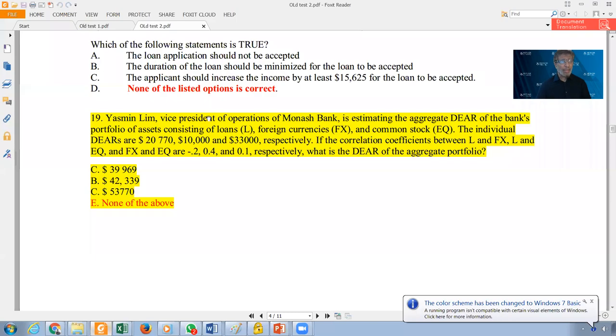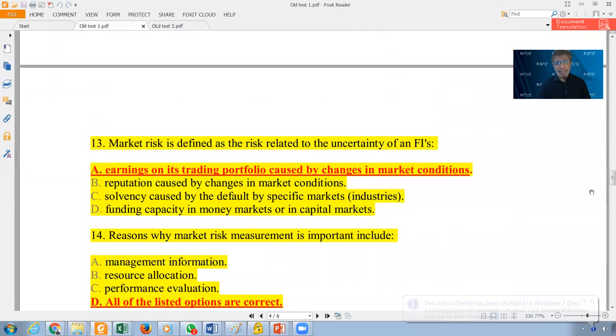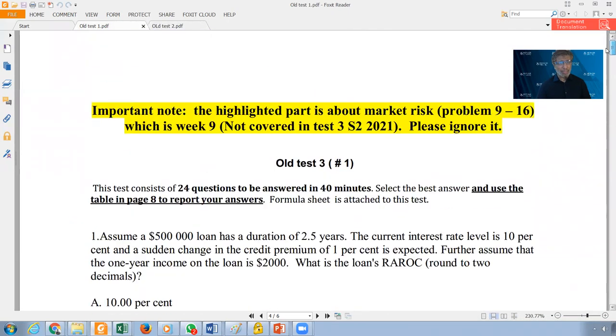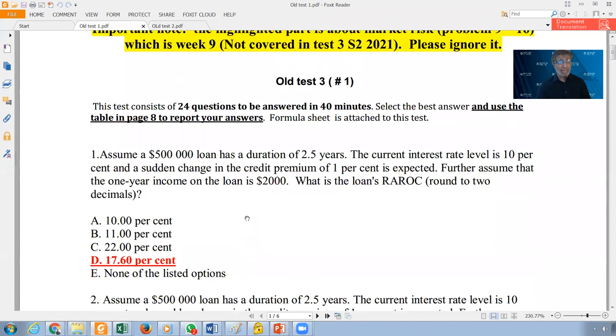If you look at here at the tests, this is actually all test one and all test one is, as usual, 24 problems. And some of the parts now highlighted for you, which is problem from nine to 16, this belongs to week nine. Why it is in this test? Because test three used to cover week seven, eight, and nine. Now it covers only week six, seven, and eight. So the problems here about the ones that you will look at is about week seven and eight.